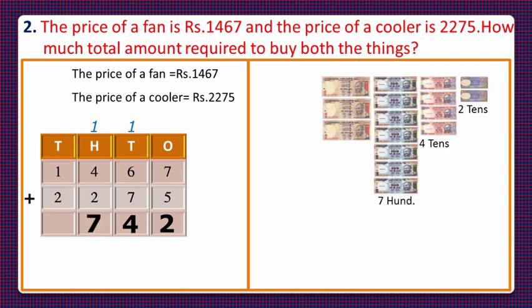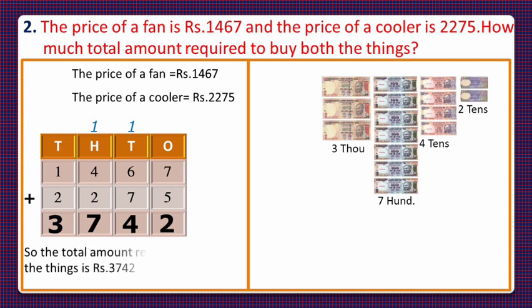Now we have 7 hundreds, which we write in the hundreds column. On counting the thousands, there are 3, so we write 3 in the thousands column. Our final answer is 3742. The total amount required to buy both things is rupees 3742.